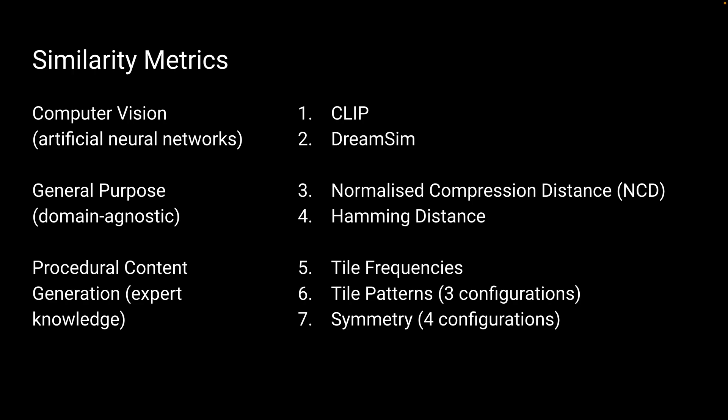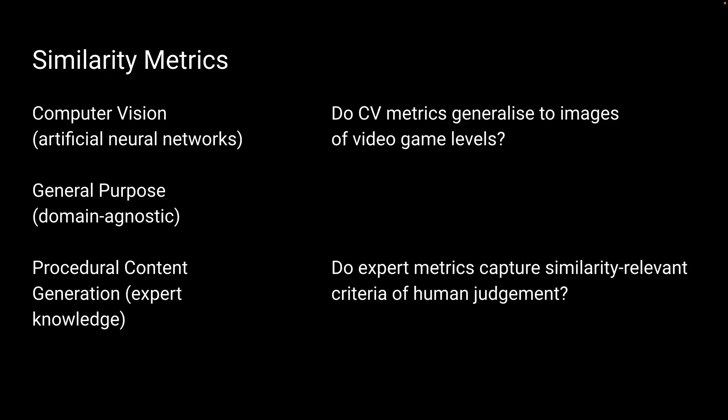We specifically select metrics because they're used in video games-related research and in the games industry. We have specific questions about these groups of metrics. Computer vision metrics are trained primarily on natural images. So, can they actually generalize to synthetic images of video game levels? And metrics from the PCG literature are custom solutions designed by hand with expert knowledge intuition. But do these expert metrics actually capture similarity-relevant criteria of human judgment?